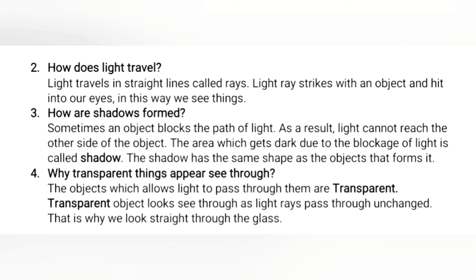Question number 4: why do transparent things appear see-through? The objects which allow light to pass through them are transparent. Transparent objects look see-through as light passes through and continues. That is why we can look straight through the glass.